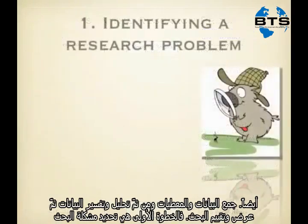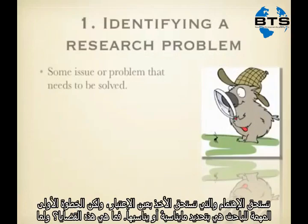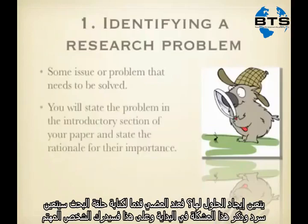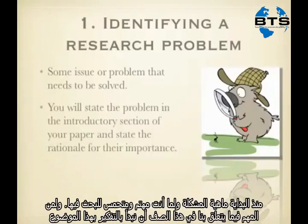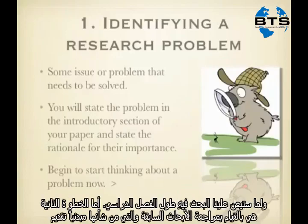That first step — identifying the research problem — involves discovering some issue or problem that needs to be solved. There are a lot of issues in the world worthy of interest, but the important first step is for the researcher to identify what that issue is and why it needs to be solved. When writing your paper, you need to state this up front. For us in this class, it's important at the very beginning to start thinking about that topic and what you'll be studying for the rest of the semester.